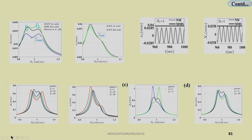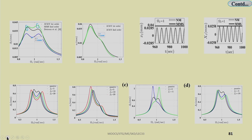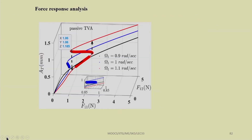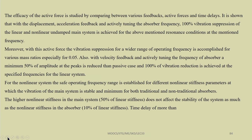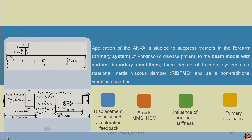All those cases you have to verify as part of your assignment in this course. The effect of active force by various feedback and passive cases can be plotted as force-response plots. For example, by varying F₁₁ and F₁₂ simultaneously in a 3D plot, you can verify the response. This way you can verify the system, seeing what we mean by traditional and non-traditional absorbers, and solve both cases as an assignment.